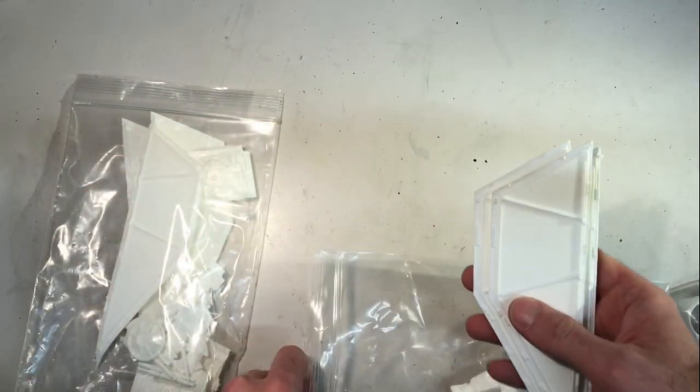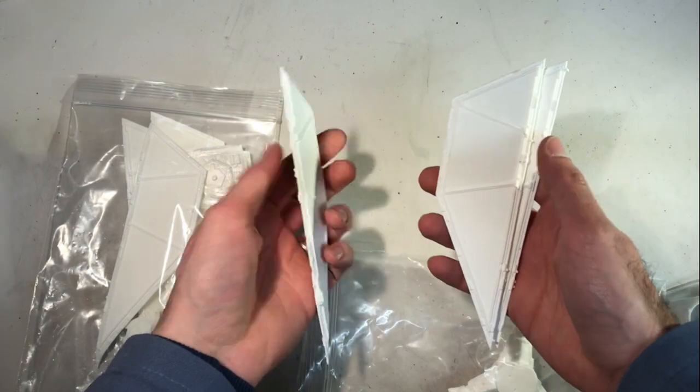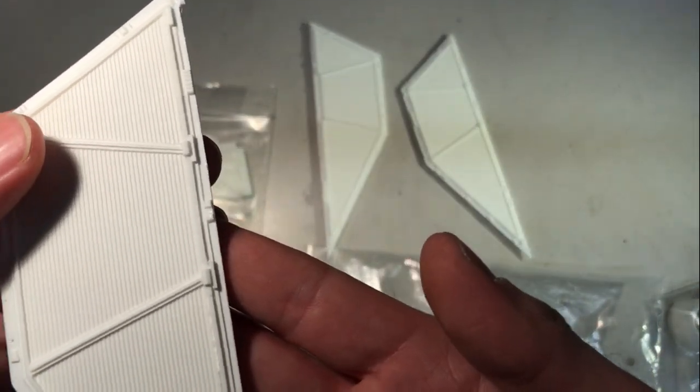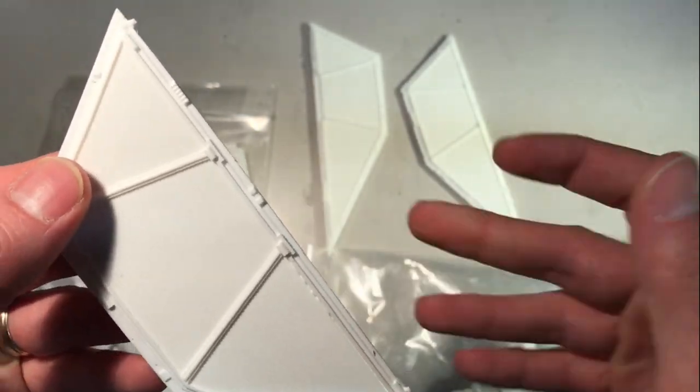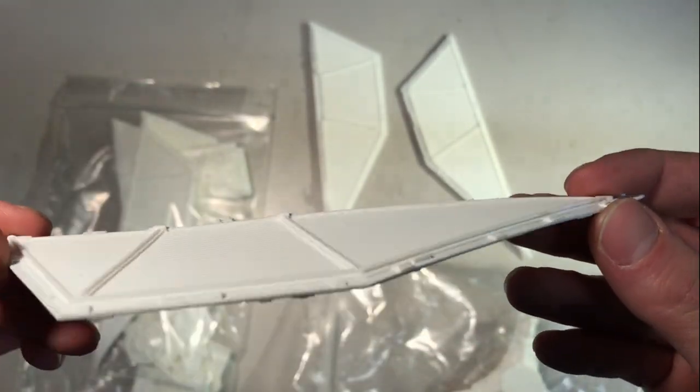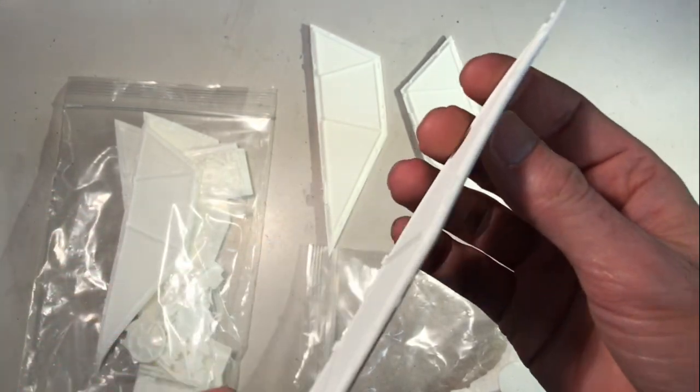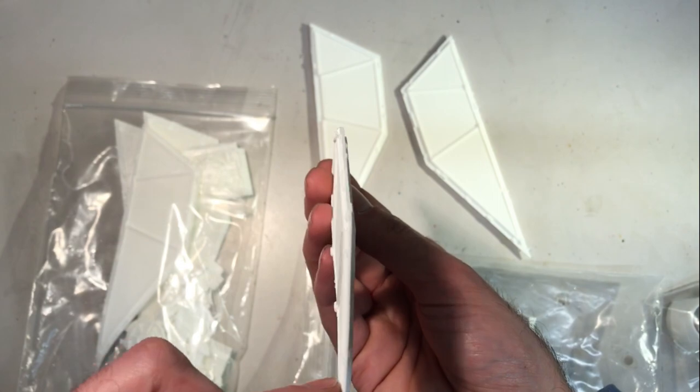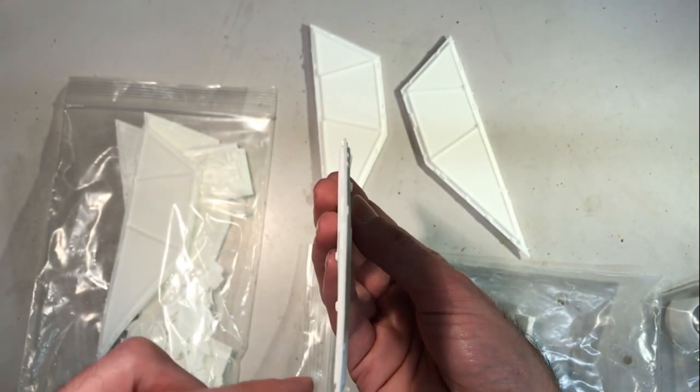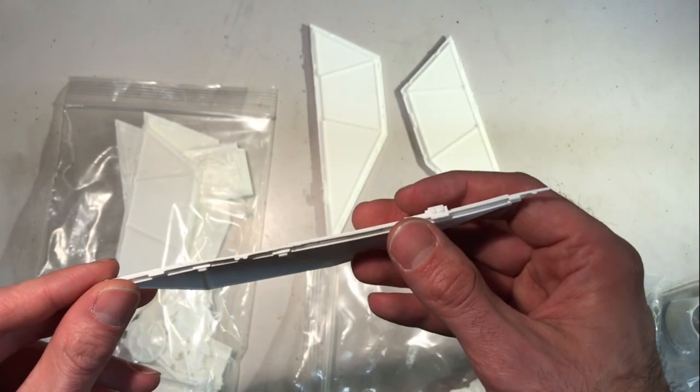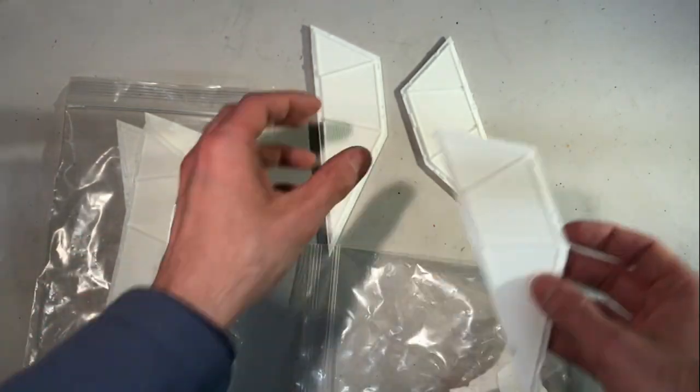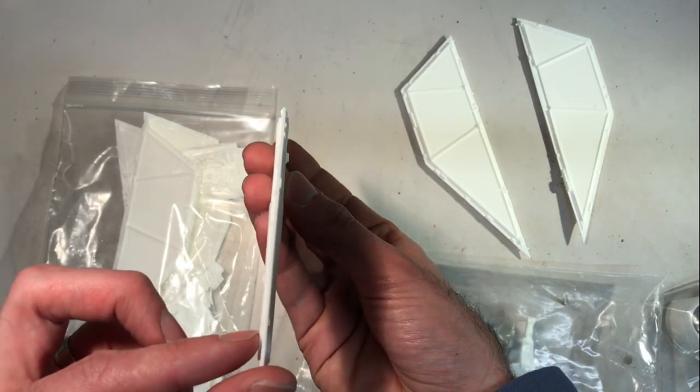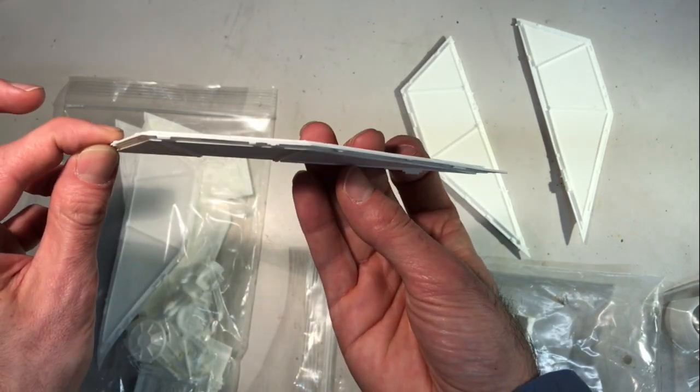And here we have some wings parts. Here you can see the details. The parts are nicely casted. Perhaps a little warp which will have to be corrected using heat. But not all of the parts are like this. If you look at this one, it's pretty straight.